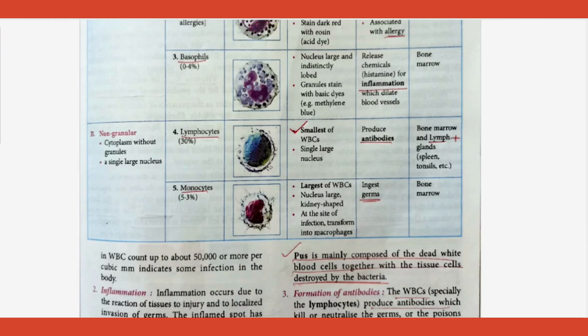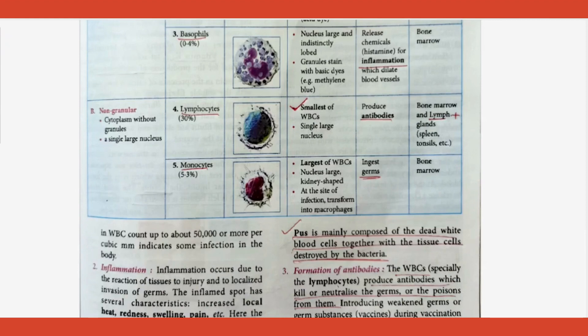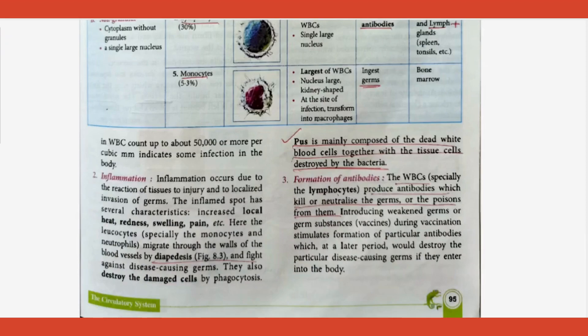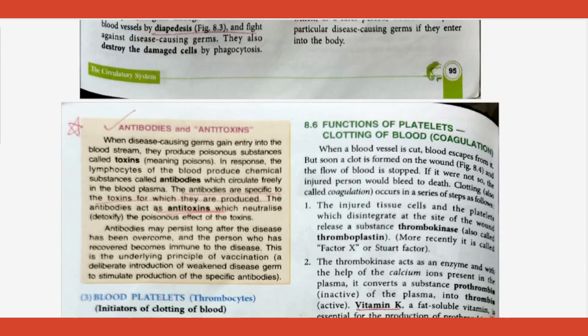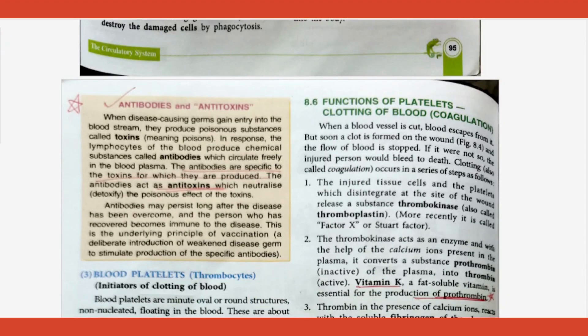The smallest of WBCs is lymphocytes, which produce antibodies. What is pus? It is composed of dead WBCs plus tissue cells destroyed by bacteria — this has come once or twice in exams. Also learn to differentiate between antibodies and antitoxins.